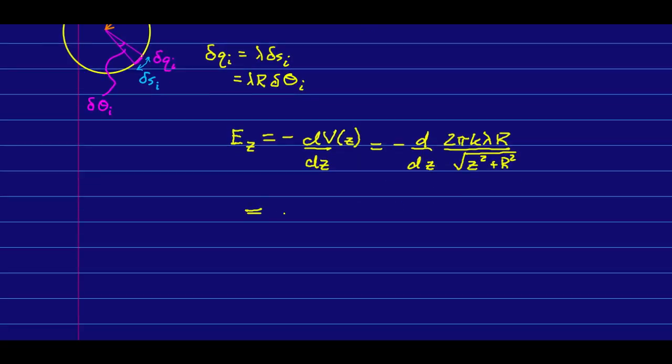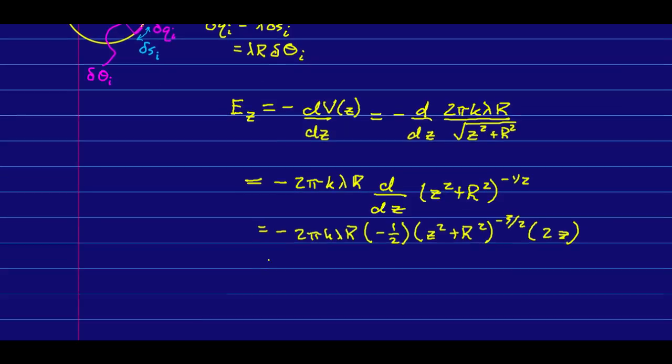Well, that derivative is not too difficult. I'm going to just pull out all the constants. And if you recognize that this 2πλR is the circumference times the linear charge density, you can see that this is KQZ over (z² + R²)^(3/2), which is exactly what we got back in the electric fields unit for the electric field due to a thin ring.